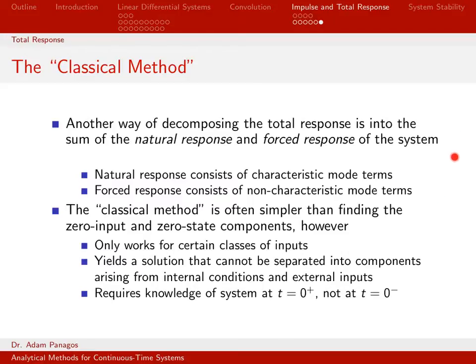The forced response, when using this approach, consists of all the non-characteristic modes of the system, and this is the part that's due to the input. Typically, when you use this classical method, you can solve for y_n(t) pretty easily, like we've done. But doing the forced response involves guessing — if you tell me the form of the input, I go to a table, look it up, find that corresponding input, and guess an answer for the forced response. If your input is listed in the table, this is a pretty fast way to do the problem.